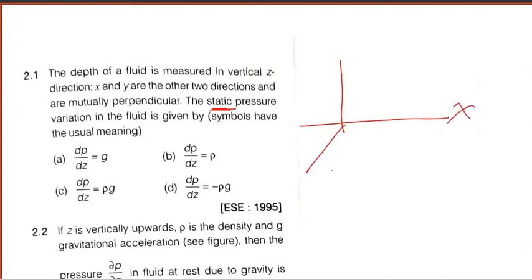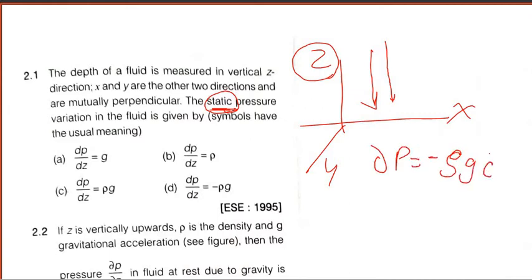Suppose these are X and Y directions and this is Z direction. Pressure variation in a static fluid is dependent on the Z, the height or the depth of the fluid. That can be written as del P equals minus rho G del Z. So the correct answer should be this one. The negative sign is just showing the direction of pressure.